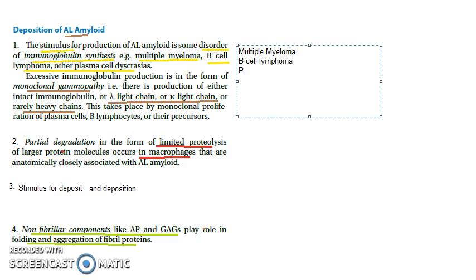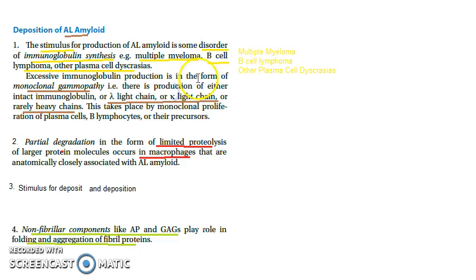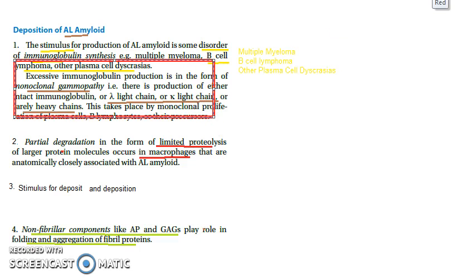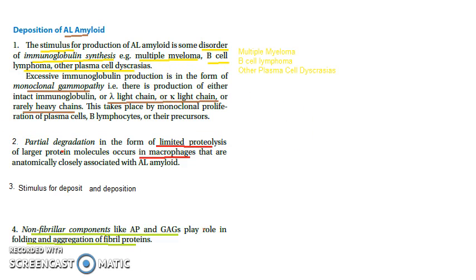Multiple myeloma, B-cell lymphoma, and other plasma cell dyscrasias are the stimuli. These lead to excessive immunoglobulin production in the form of monoclonal gammopathy — production of intact immunoglobulin lambda, kappa, or rarely heavy chains.